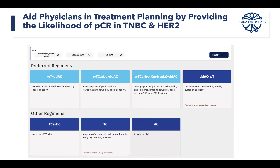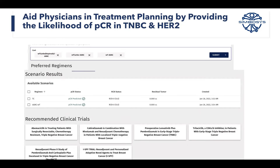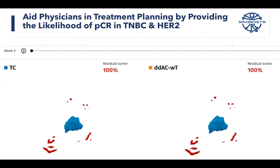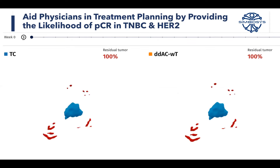That's where the application comes in. The physician can select the therapies — in this case the patient couldn't handle immunotherapy — and the physician wanted to know if they could forego anthracycline, which is known to cause lifelong cardiotoxicity and secondary leukemia in a number of patients. So they simulated both with and without anthracycline to see what the expected response would be.